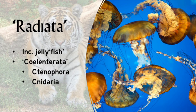An even older name for the group is Slentorata, which you won't encounter all that often. This artificial group includes two monophyletic phyla — Ctenophora and Cnidaria — both of which include organisms that are called jellyfish.